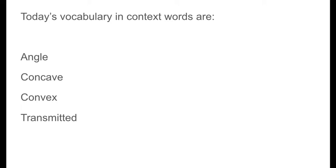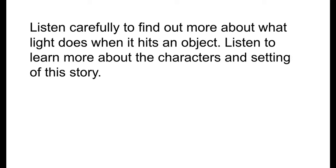Let's talk about the core vocabulary and context words we're going to be hearing in today's story. You're going to hear 'angle' — an angle is a slant or the space or shape formed when two lines or two surfaces meet in one place; it's the corner of something with straight sides. 'Concave' means curving inward or shaped like the inside of a bowl. 'Convex' is rounded or curving outward, shaped like the outside of a bowl. 'Transmitted' means sent or passed along or spread through a material. Listen carefully today to find out more about what light does when it hits an object.